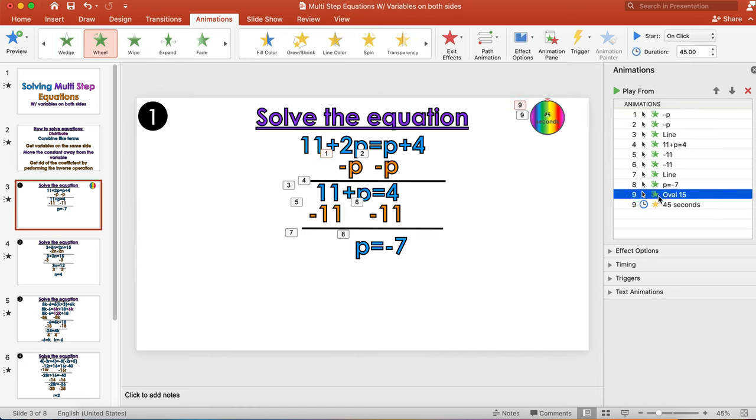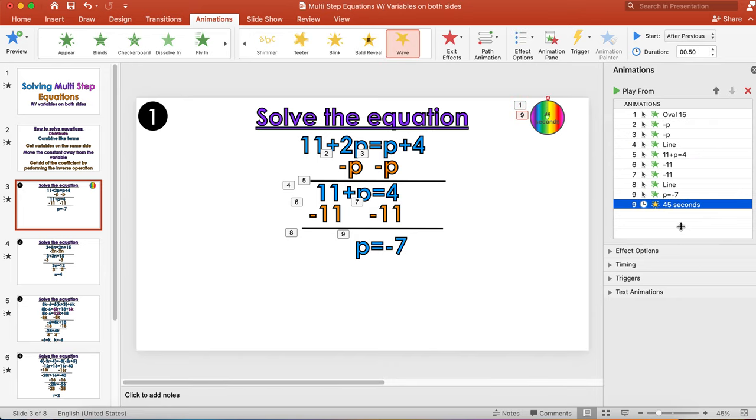So what I'm going to do is select animation nine, move it all the way up to the top, and then select the other animation nine which is the 45 seconds and move it not all the way to the top but under the first animation.